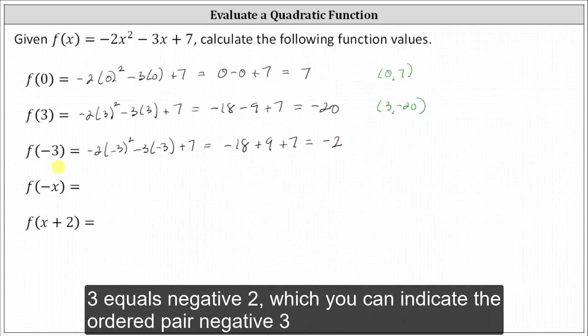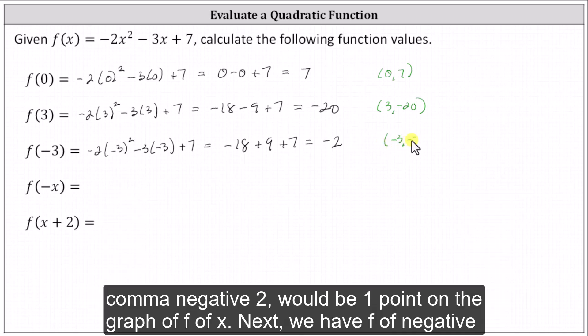Negative nine plus seven is negative two, so f of negative three equals negative two, which indicates the ordered pair of negative three comma negative two would be one point on the graph of f of x.